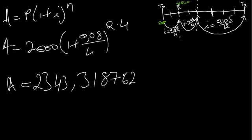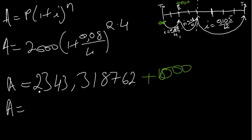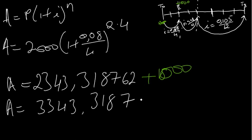Another 1000 rand was added on the same day. Therefore A = 2343.31876... + 1000, which gives us A = 3343.31876... at t2. This is the money we have at t2.